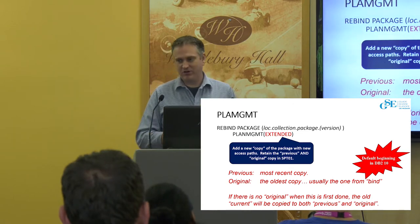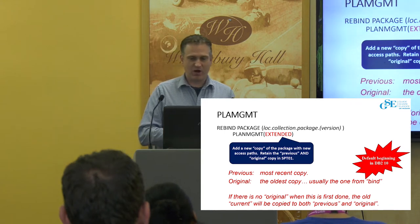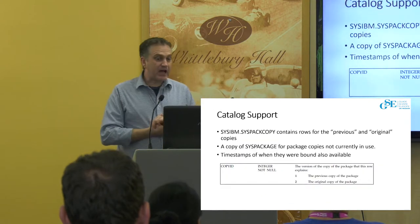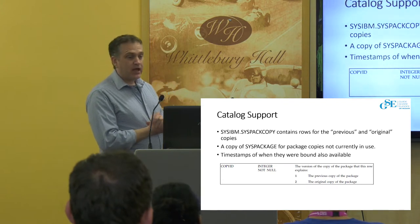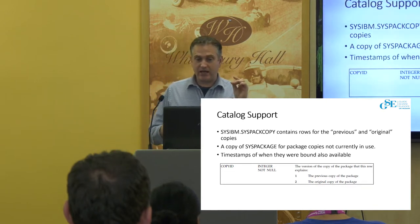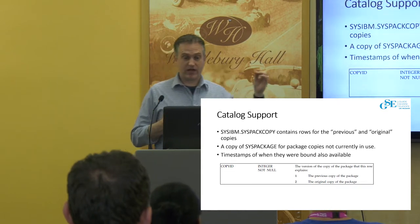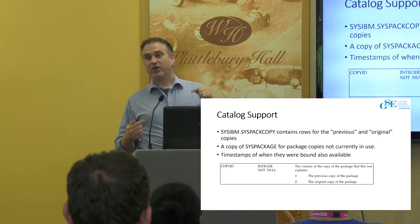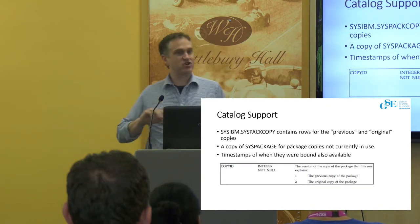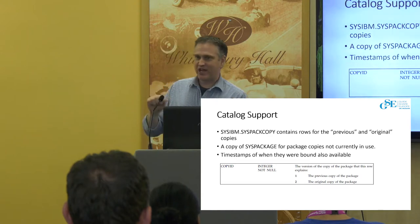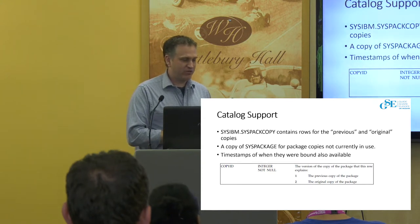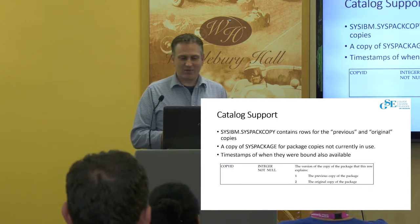The last few releases of DB2 have given you tools for managing SPT01 — that's where the guts of the package actually live. We also get catalog support with SYSPACKOPY, which has a lot of the same columns as SYSPACKAGE, with a copy ID. Copy ID one means the previous, copy two is the original, and the current is always in SYSPACKAGE. At some point the value of those extra copies diminishes pretty quickly, and maybe you want to think about doing some cleanup.